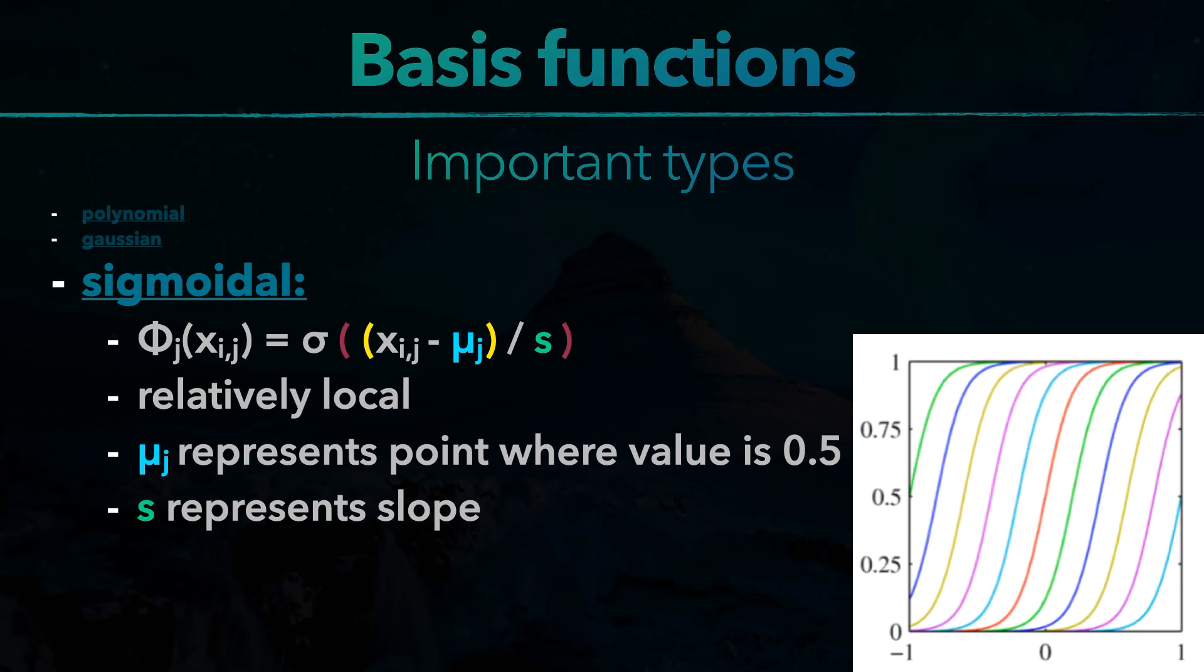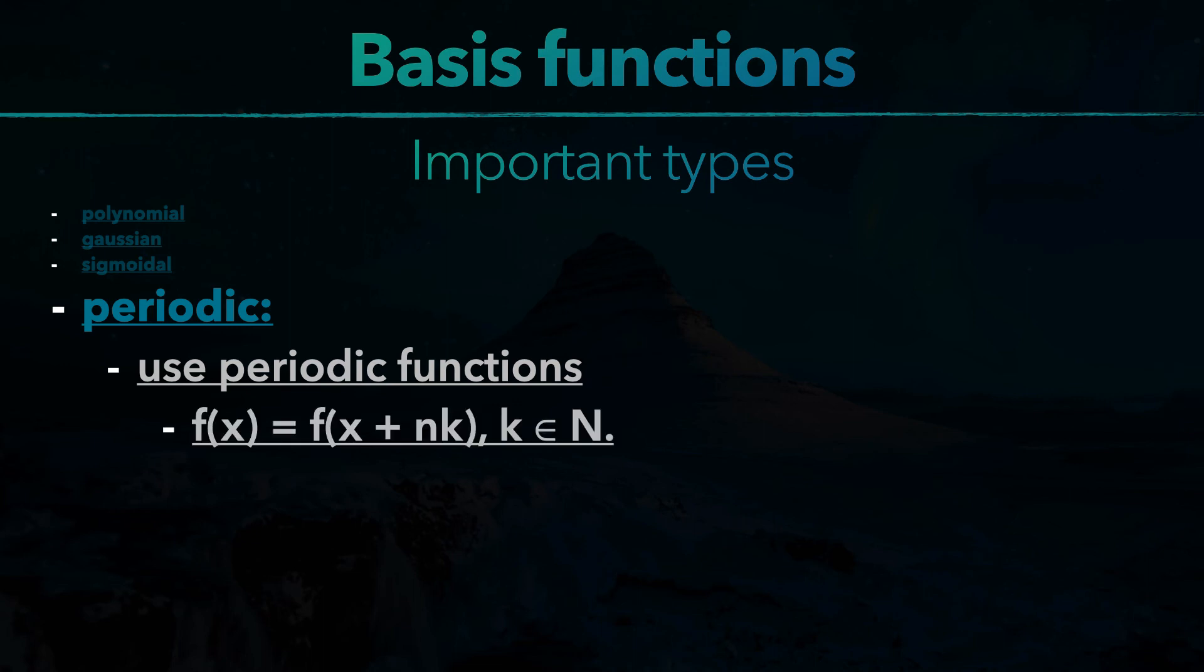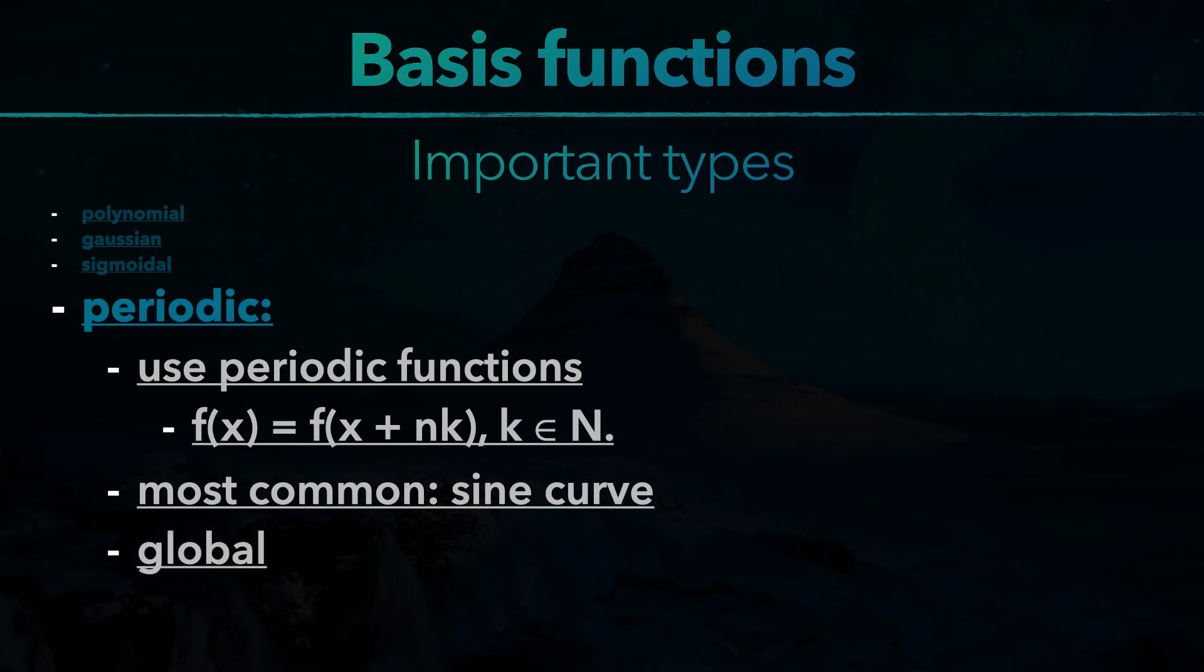At fourth we have periodic basis functions, which make use of periodic functions. That means f of x equals f of x plus nk, where k is an element of the natural numbers. And the most commonly used one is the sine curve. A variety of sine curves is also used in the very popular Fourier transform to approximate a function. Periodic functions are global.